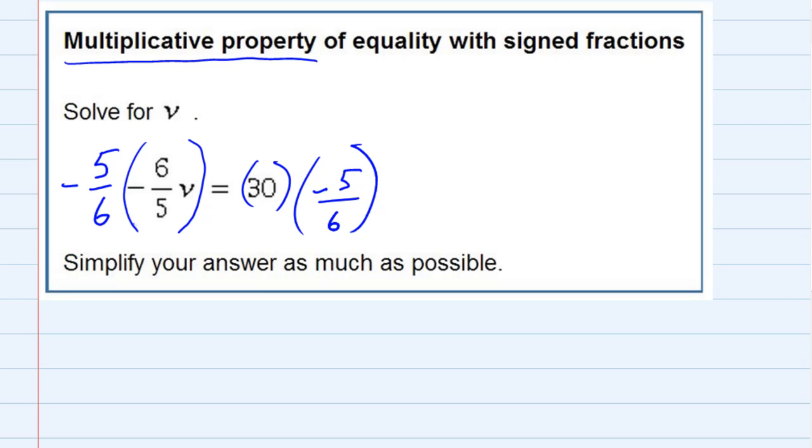So the fives will now cancel on the left hand side. The sixes will also cancel, that's why I use the reciprocal. But the reciprocal also happens to be the same sign. So a negative times a negative will also cancel and become a positive, leaving me with just the v on the left hand side of our equation.